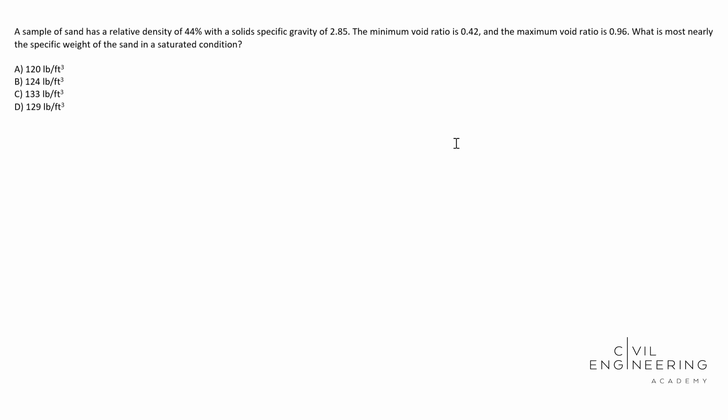So today we have a soil mechanics problem and in particular this is a soil consolidation problem. A sample of sand has a relative density of 44 percent with a solid specific gravity of 2.85. The minimum void ratio is 0.42 and the maximum void ratio is 0.96. Most nearly what is the specific weight of the sand in the saturated condition, and we see our options there A through D.